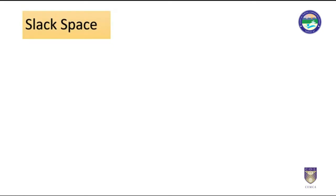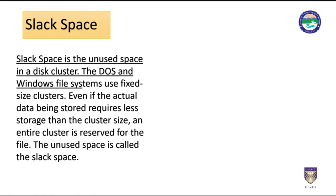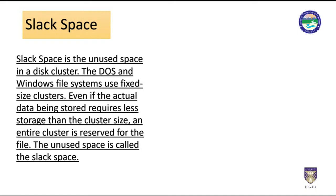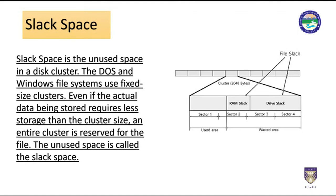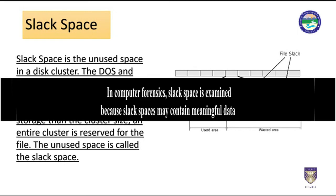Slack space is the unused space in a disk cluster. Disk operating systems and Windows file systems use fixed-size clusters. Even if the actual data being stored requires less storage than the cluster size, an entire cluster is reserved for the file — the unused space is called slack space. For example, if the partition size is 2GB, each cluster will be 32KB. Even if a file requires only 4KB, the entire 32KB will be allocated, resulting in 28KB of slack space. In computer forensics, slack space is examined because it may contain meaningful data.